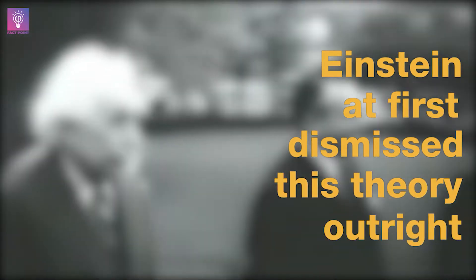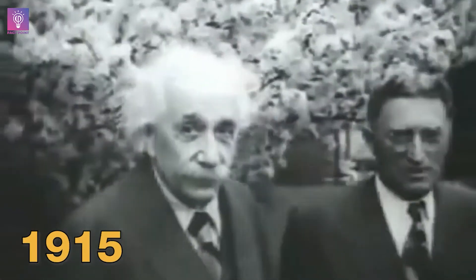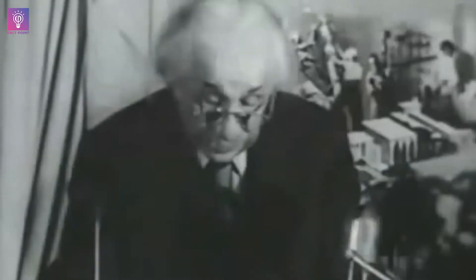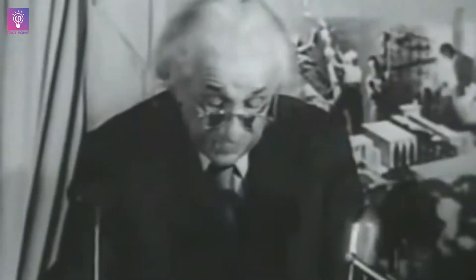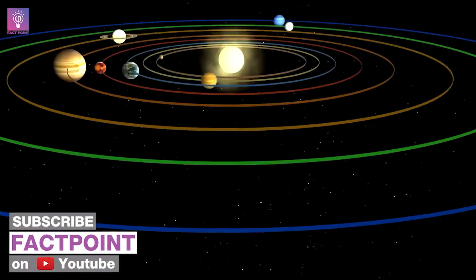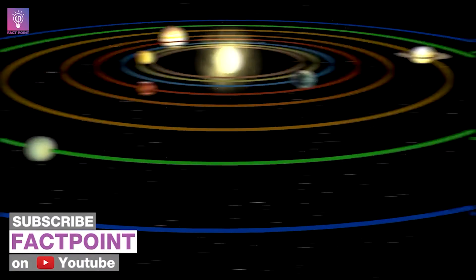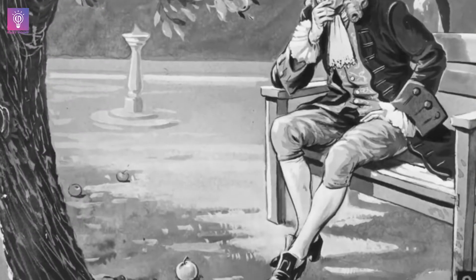Fact number one. Einstein at first dismissed this theory outright when it was presented to him as a possibility. In 1915, Einstein proposed a revolutionary new concept to replace Newton's original theory of gravity. Einstein dispensed with the idea of gravity as a magnetic force of attraction, in favor of the idea that space tends to curve around the mass of an object. In effect, he discovered that the law of gravity is really a law of geometry.